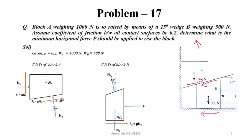By Newton's third law, the reaction from block A on wedge B at the inclined surface is equal in magnitude but opposite in direction to N2 and F2. These forces act along the inclined surface making an angle of 15 degrees with the horizontal. The free body diagram of wedge B is now complete with all forces identified.